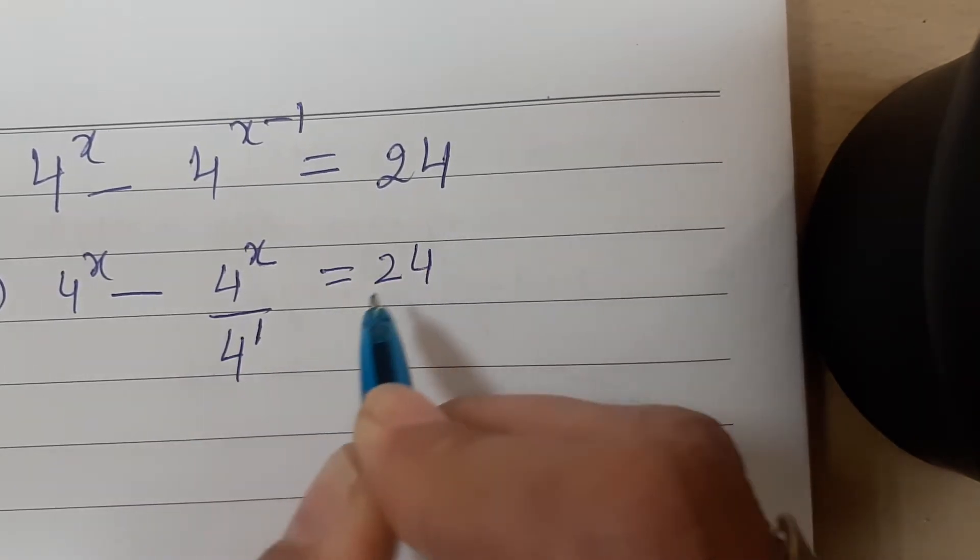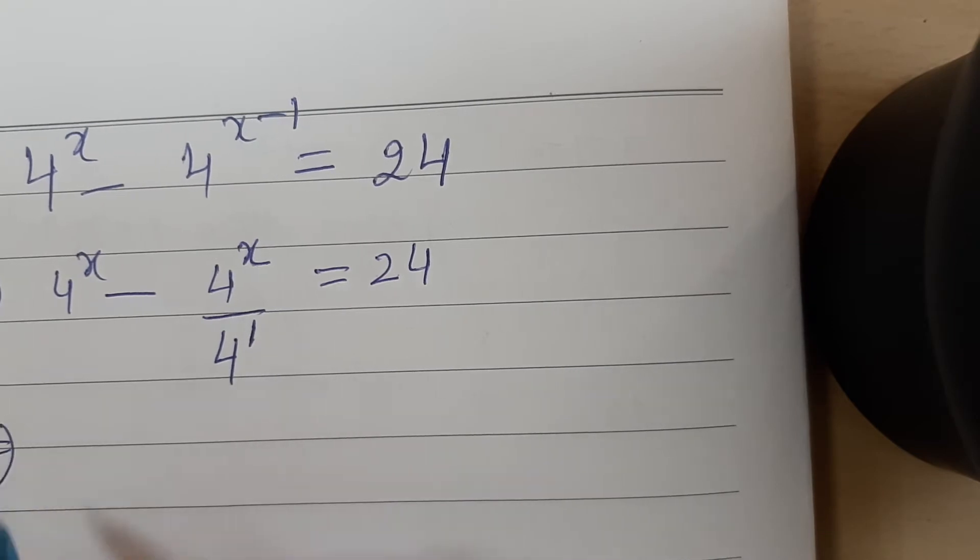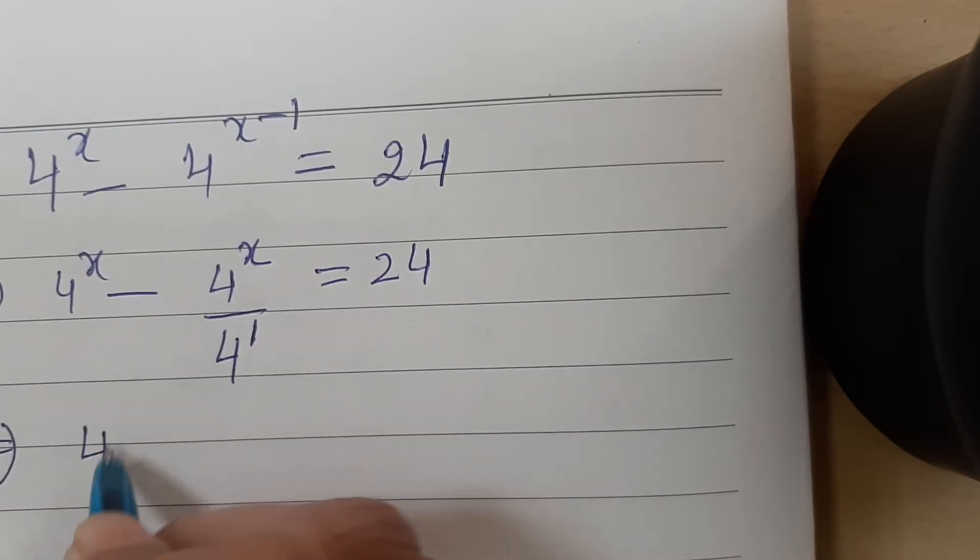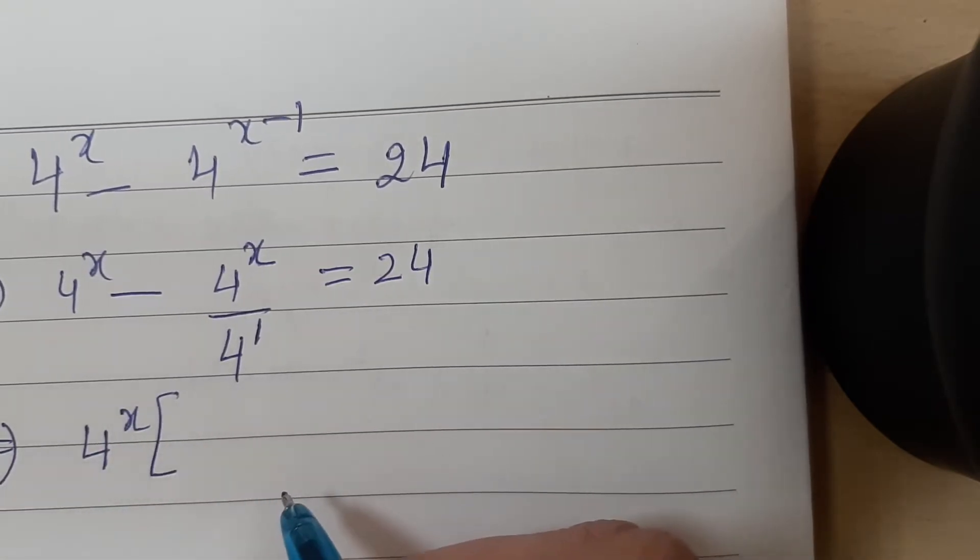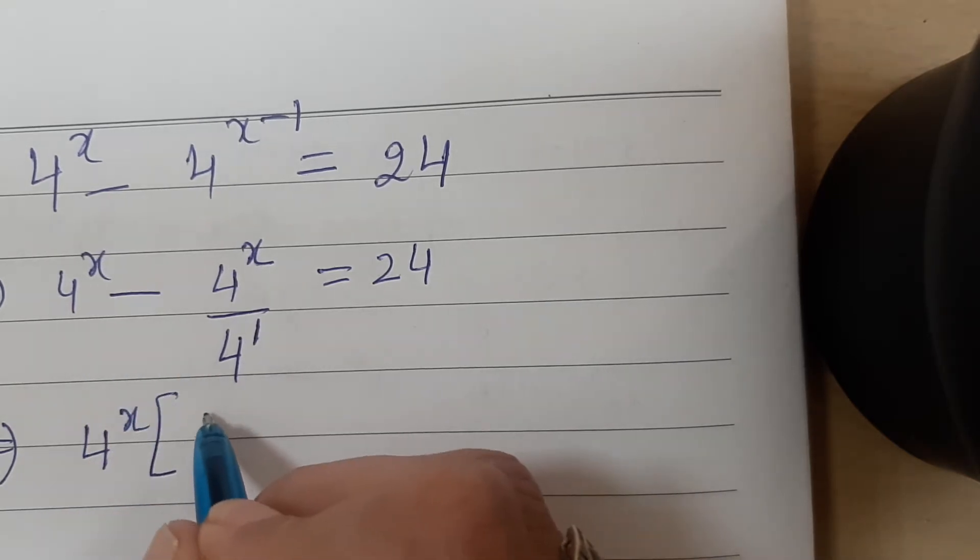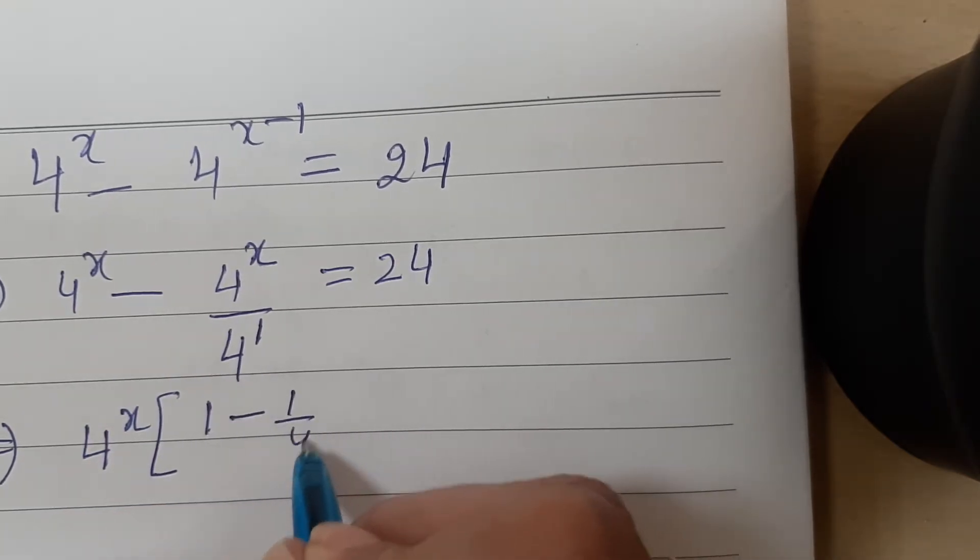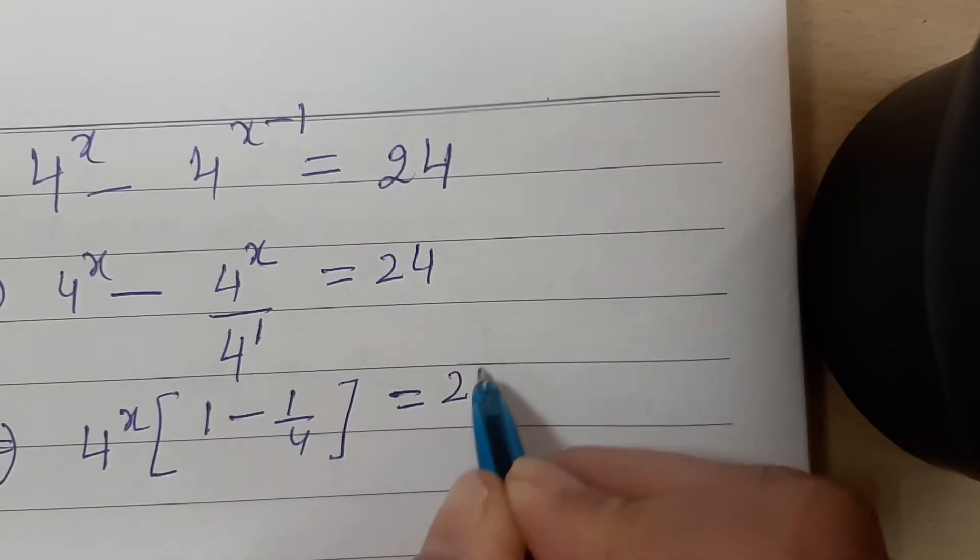So this is equal to 24. Now you can see that we can take 4 to the power x common in the left hand side. So here we are left with 1 minus 1 by 4. This is equal to 24.